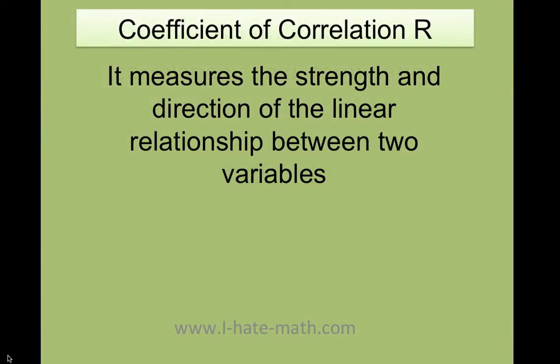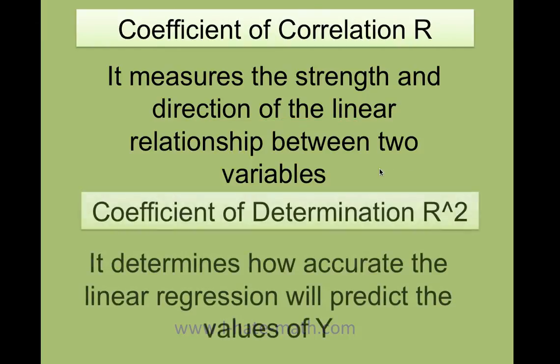But first let's understand what is each one. The coefficient of correlation basically measures the strength and direction of the linear relationship between two variables, which is going to be x and y. Then the determination, which is R squared, as you can see this is R and this is R squared, determines how accurate the linear regression will predict the values of y.